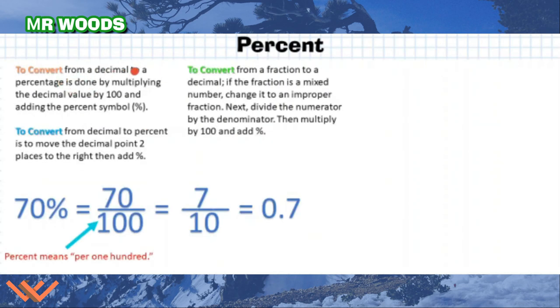More on percent. To convert from a decimal to a percentage is done by multiplying the decimal value by 100 and adding the percent symbol. Well, here, if I did that, 100 times 0.7 is going to give me 70%. Because if it moves 1, 2, I'd have a zero there. To convert from a decimal to percent is to move the decimal point two places to the right. To convert from a fraction to a decimal, if the fraction is a mixed number, change it to an improper fraction. Next, divide the numerator by the denominator, then multiply by 100 and add percent.